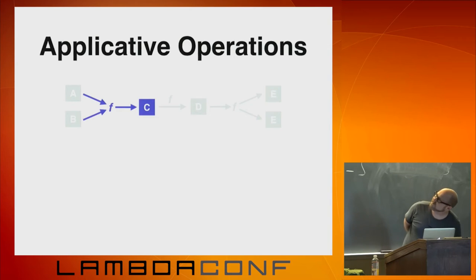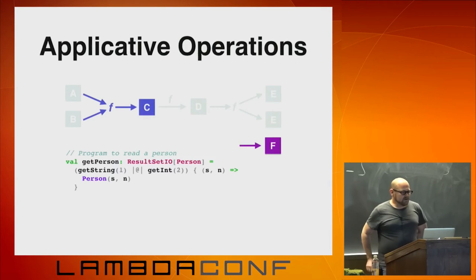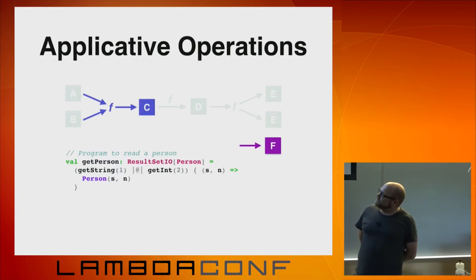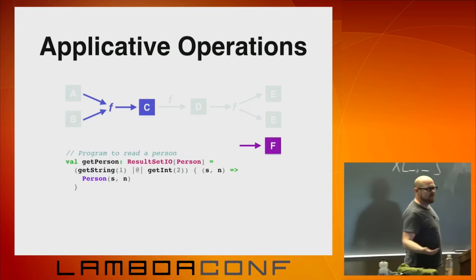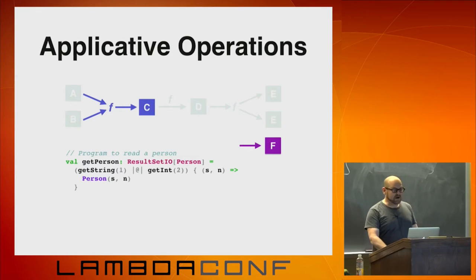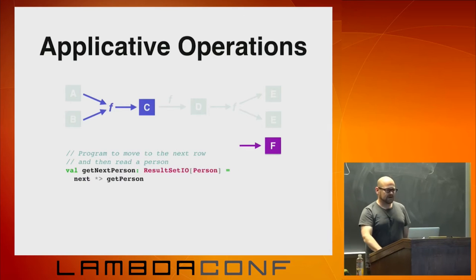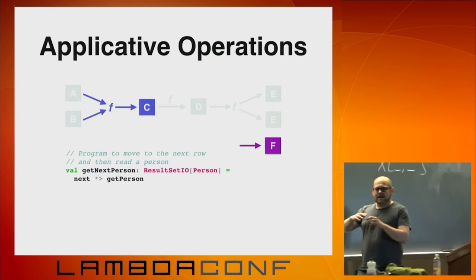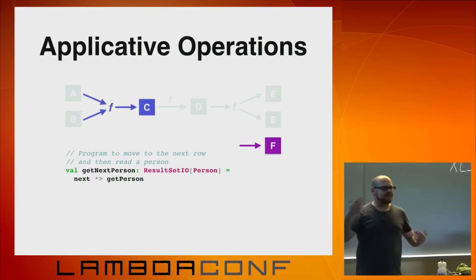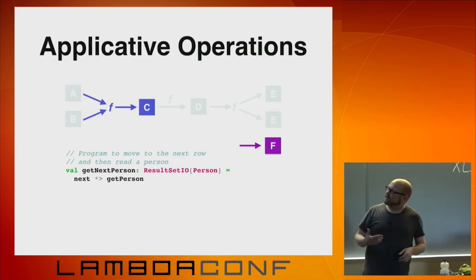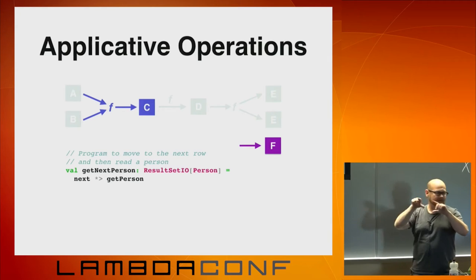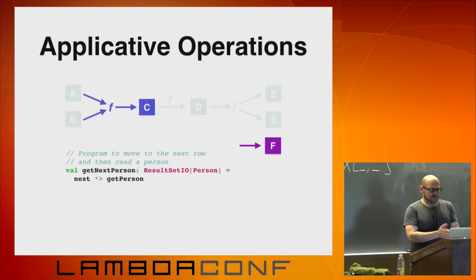We've got applicative operations that come from the liftA2 operation plus the unit one. We can write getPerson in a different way: getString from the first index, applicative-apply, getInt from the second index, and map that to the person constructor. That turns out to be the same program written using applicative style. With applicative you can also discard one value and evaluate it only for its effect — for example, go to the next row in the result set, throw away the boolean it returns, assume there's another row, and then get a person. This operator is called rightShark — there's rightShark and leftShark.